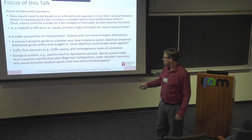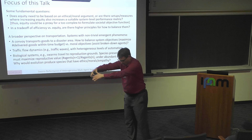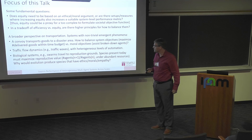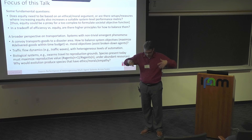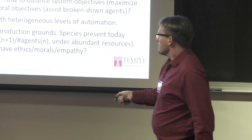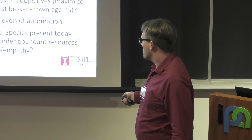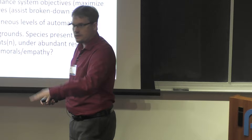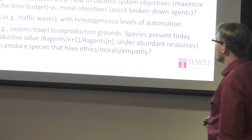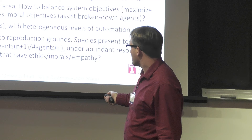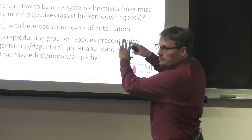We're also interested in biological systems. In biological systems, a swarm that has to travel to its breeding grounds and stay together to avoid predation is interesting because any species that exists nowadays has risen from many iterations of generations and evolution. In some sense, given the right circumstances and abundant resources, a species must maximize reproductive value — the number of agents in the next generation divided by the previous. So why would evolution produce species that have ethics, moral reasoning, or empathy? Some of the things I'm looking at here relate to that question.